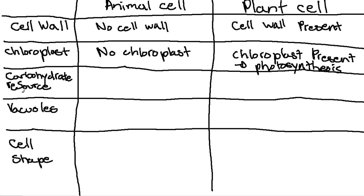The carbohydrate source in animal cells is glycogen, whereas plant cells store starch.